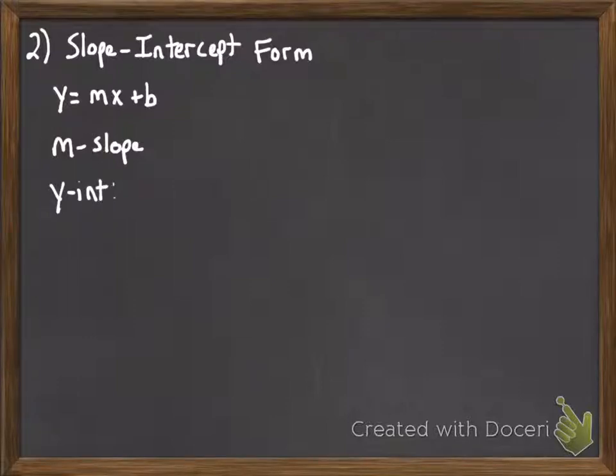Because remember, y-intercept, you put 0 in for x. Well, if you put 0 in for x in this equation, you get y equals b. So that other number happens to be your y-intercept of the equation.